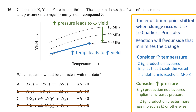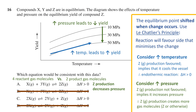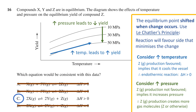Going through each remaining option: in option A we have four reactant gas molecules compared to two product gas molecules, implying Z production decreases the pressure — the opposite of what we need. Therefore, we can eliminate option A, and option C is our answer. To double check: in option C the reactant side has two gas molecules while the product side has three, meaning production of Z increases the pressure, aligning with what we determined. This verifies that option C is the answer.